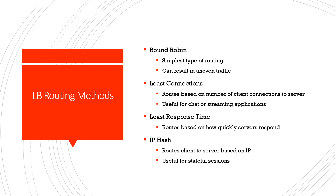Second is least connections, which is useful for chat or streaming applications where users stay persistently connected to the server. The load balancer communicates with servers and tracks how many connections each is currently serving, then routes to whichever has the least. Least response time works similarly — it measures how long each server takes to respond. If a server is handling a lot of traffic it responds slower, and the load balancer routes traffic to the faster ones.